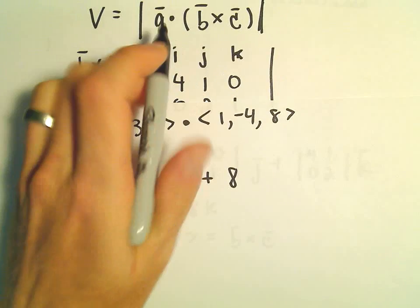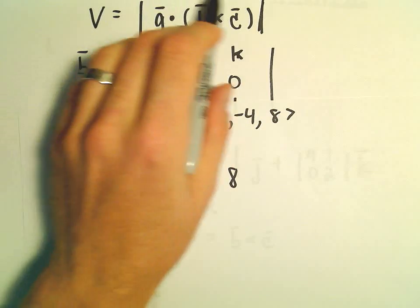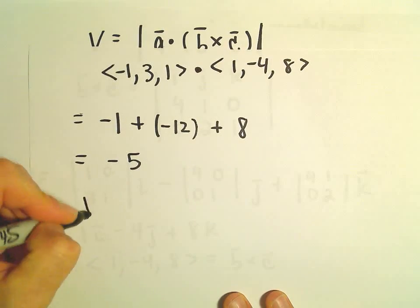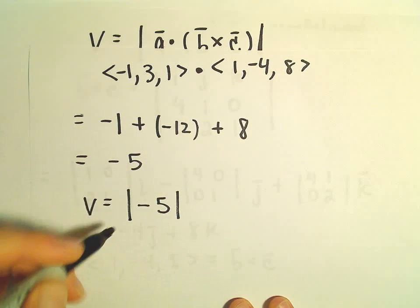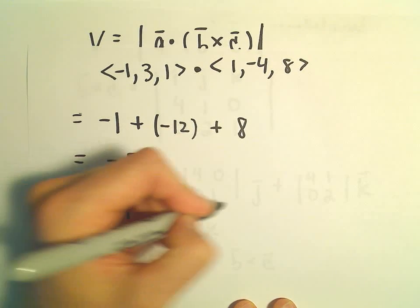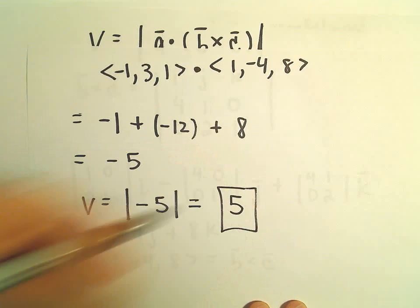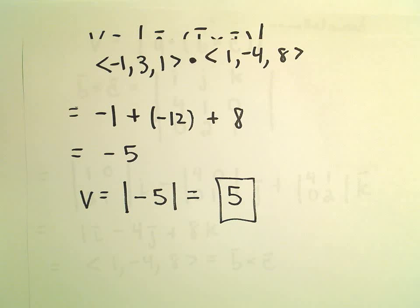The last thing we have to do is take the magnitude. The volume equals the absolute value of negative 5, which is positive 5. That will be our solution.